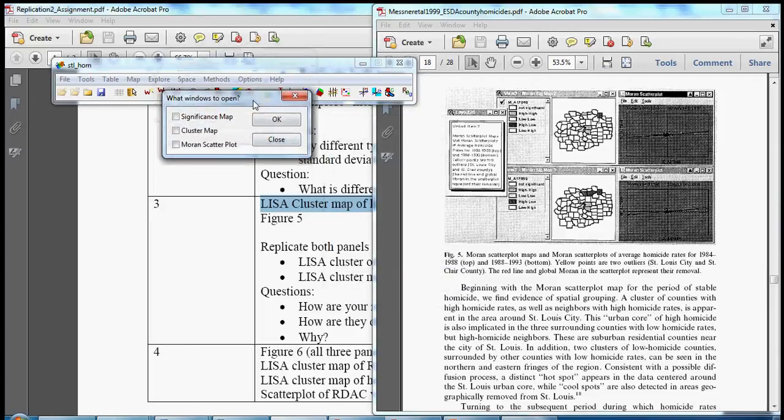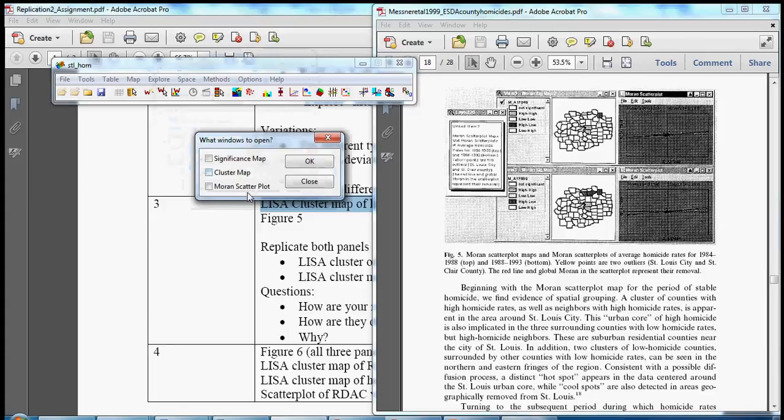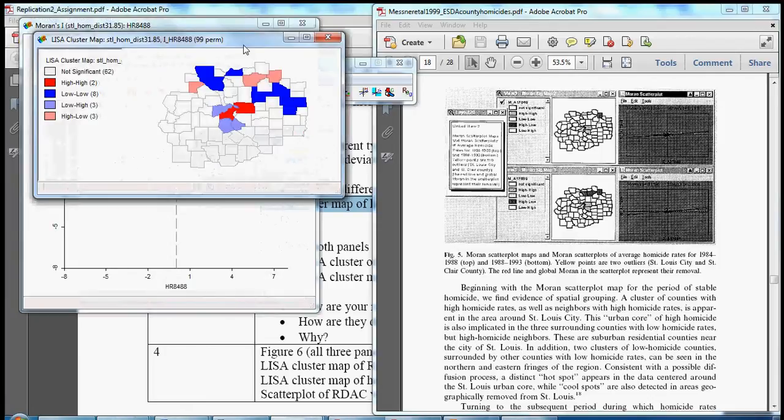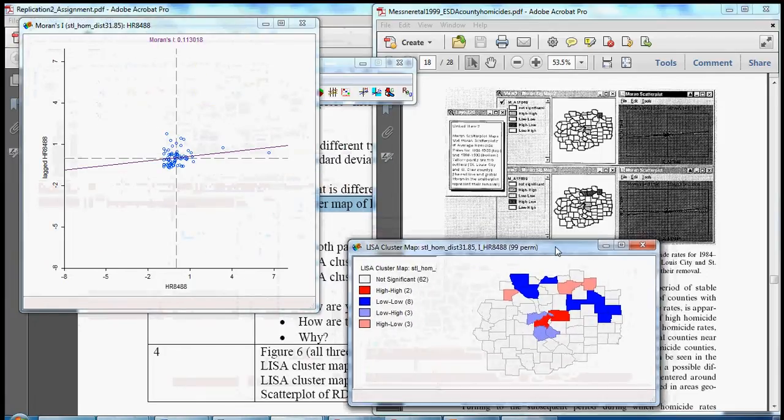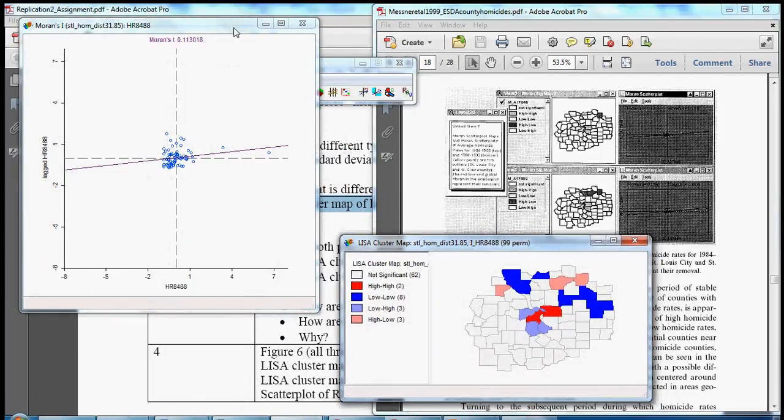We get the option to plot significance maps, cluster maps, or Moran scatter plots. We've already seen the Moran scatter plot, but let's plot them next to each other just as they appear here in figure five. So let's pick the cluster map and Moran scatter plot. And there's our LISA cluster map and here's our Moran scatter plot.